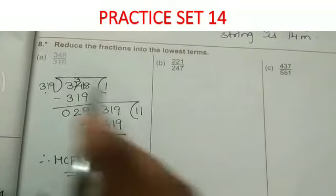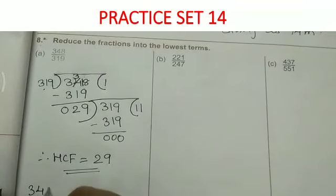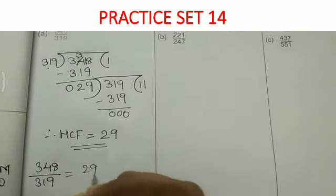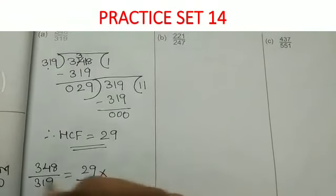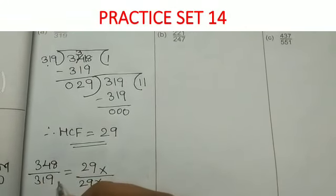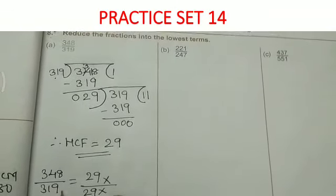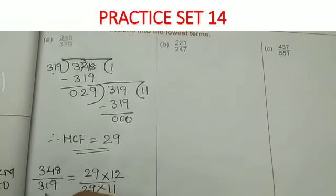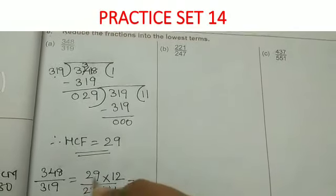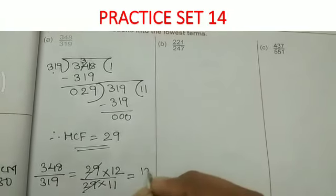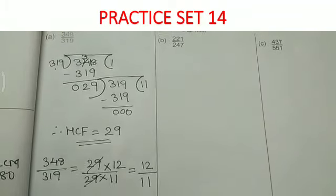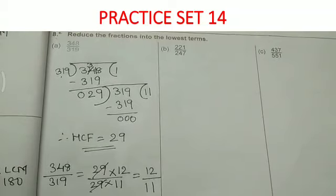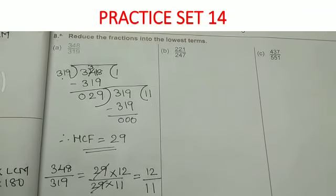Now we reduce the fraction 348/319 using HCF 29. Both numbers are divisible by 29: 29 × 12 = 348 and 29 × 11 = 319. The 29s cancel, so the answer in lowest terms is 12/11. That is how you reduce the given fraction to its lowest term.